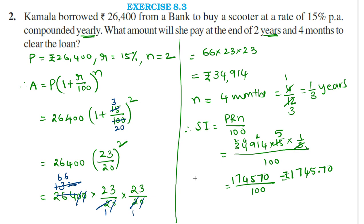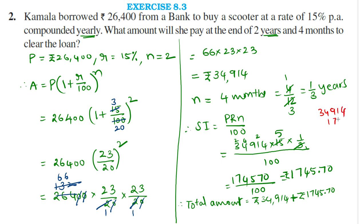This is the simple interest for the remaining 4 months. Therefore, the total amount to be paid to clear the loan is Rs. 34,914 plus Rs. 1,745.70, which equals Rs. 36,659.70. This is the amount Kamala has to pay to clear the loan. That is the final answer.